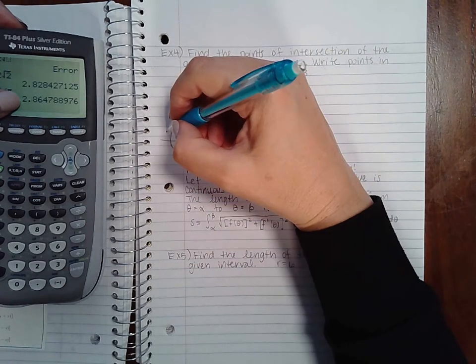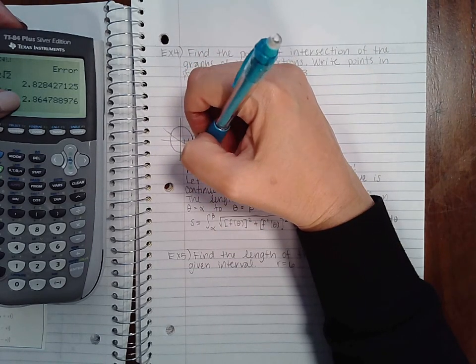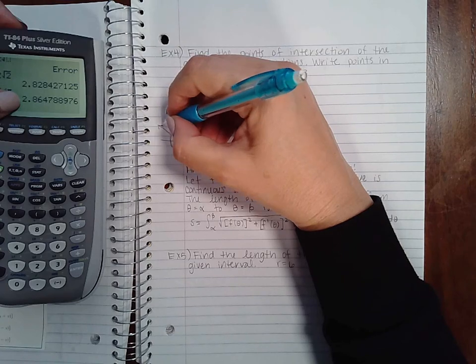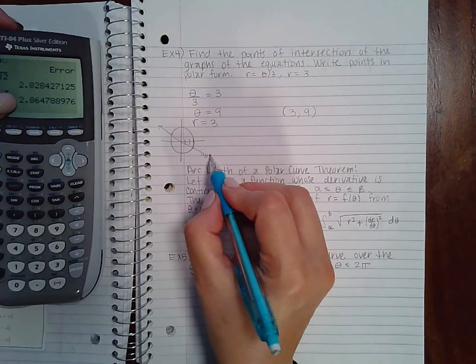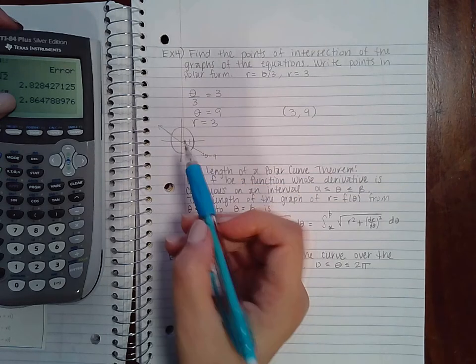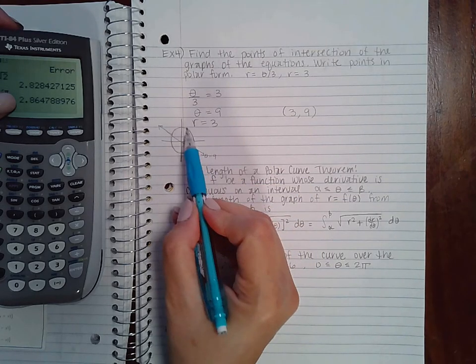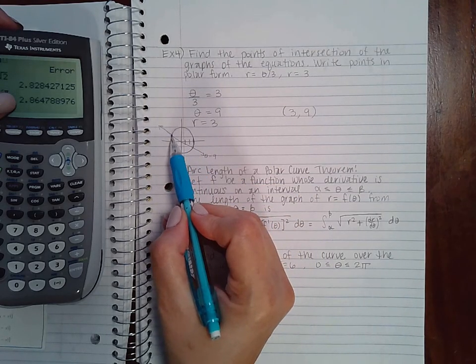So if you've got this polar axis going in this direction, this is theta equal to nine. So if you go out three and then go the angle theta equal to nine, you land here.